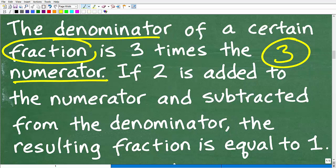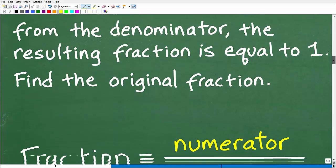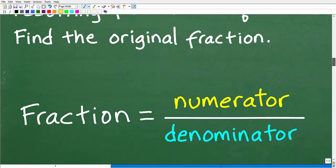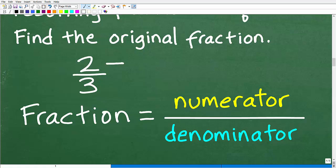Let's quickly review this and then talk about a strategy to solve this problem. When it comes to a fraction — for example, two-thirds — a fraction is constructed of two numbers. We have a top number called the numerator, and then we have the bottom number of the fraction called the denominator.